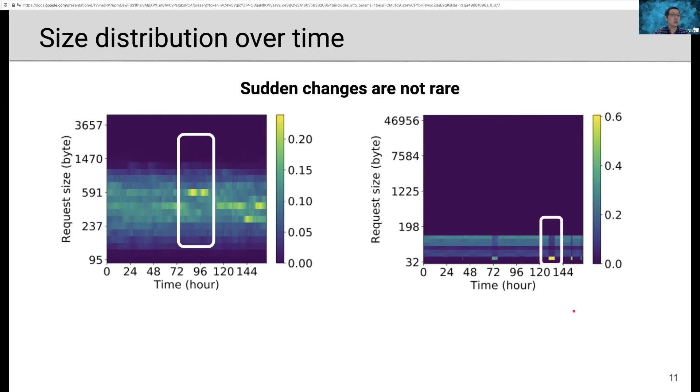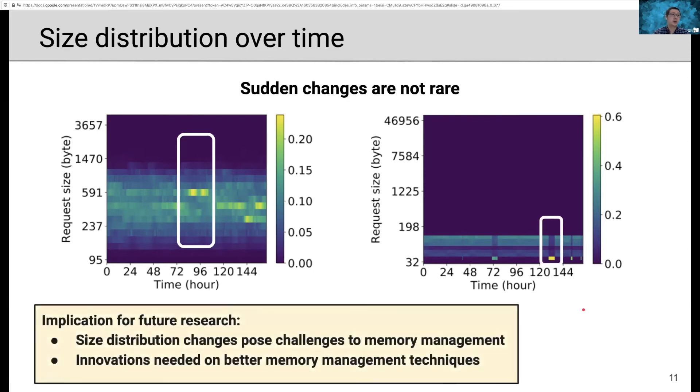So what does this mean for future research? Size distribution change often poses challenges to the memory management system. For example, memcached tries to rebalance slabs between different slab classes in order to adapt to the size distribution. In the paper, we show that this kind of slab rebalance is often suboptimal when we consider regular or irregular size distribution change. Therefore, we believe innovations are needed for better memory management techniques.